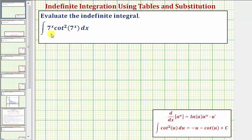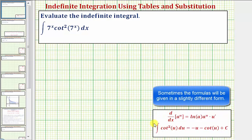Notice how the integrand contains the exponential seven raised to the power of x as well as cotangent squared. If we look under the trig section of the integration table, we should find an integration formula similar to the one given here where the integral of cotangent squared u with respect to u equals negative u minus cotangent u plus c.